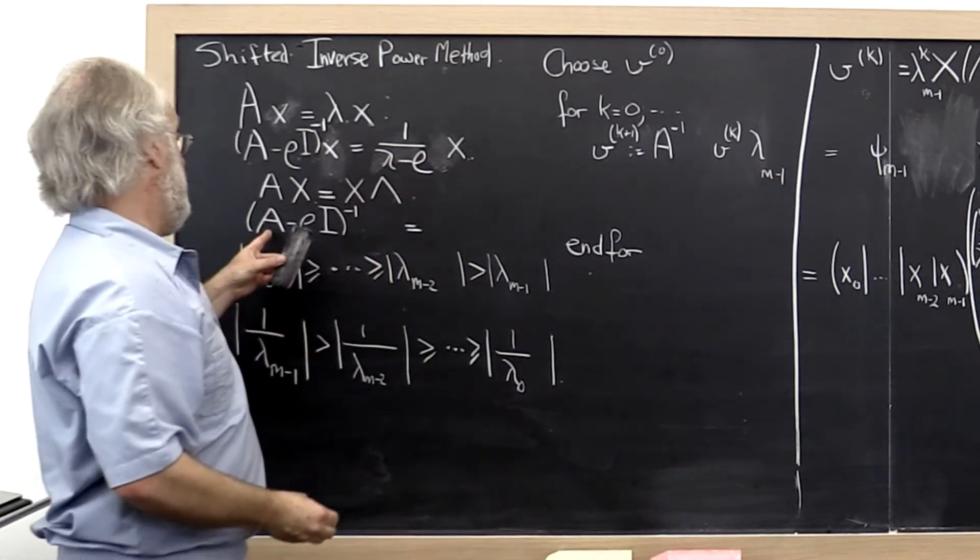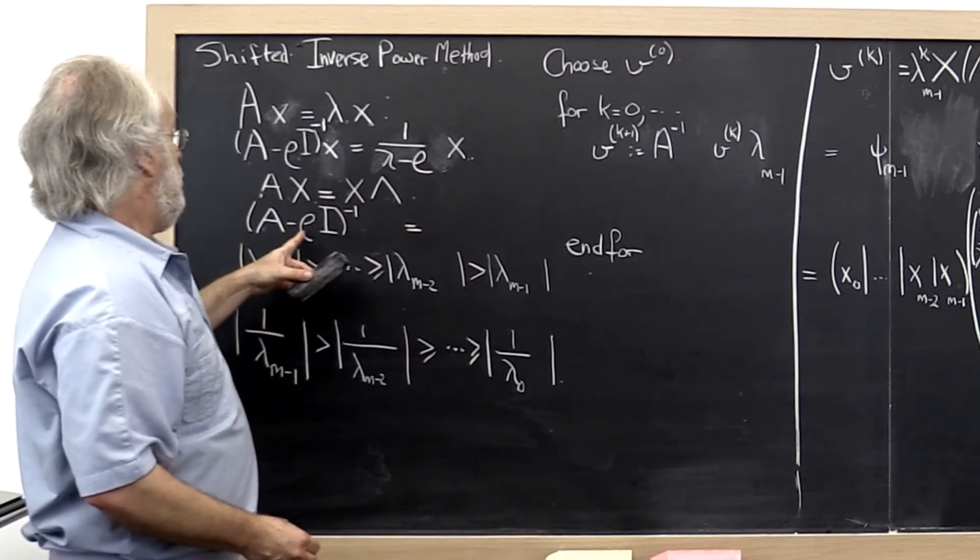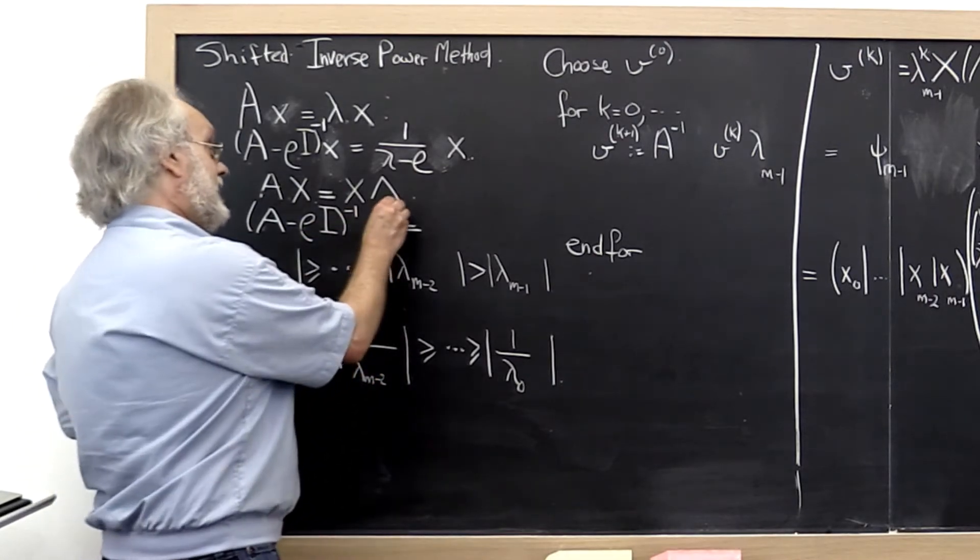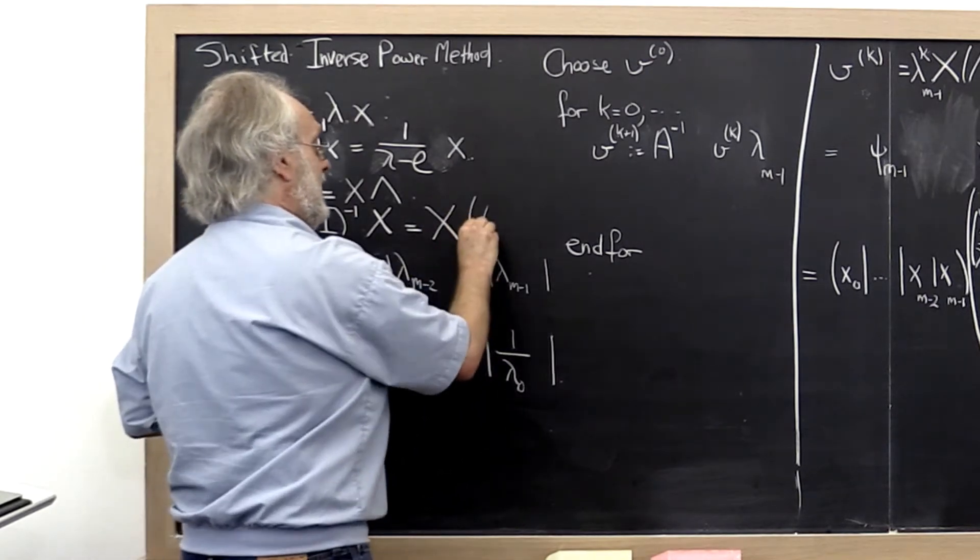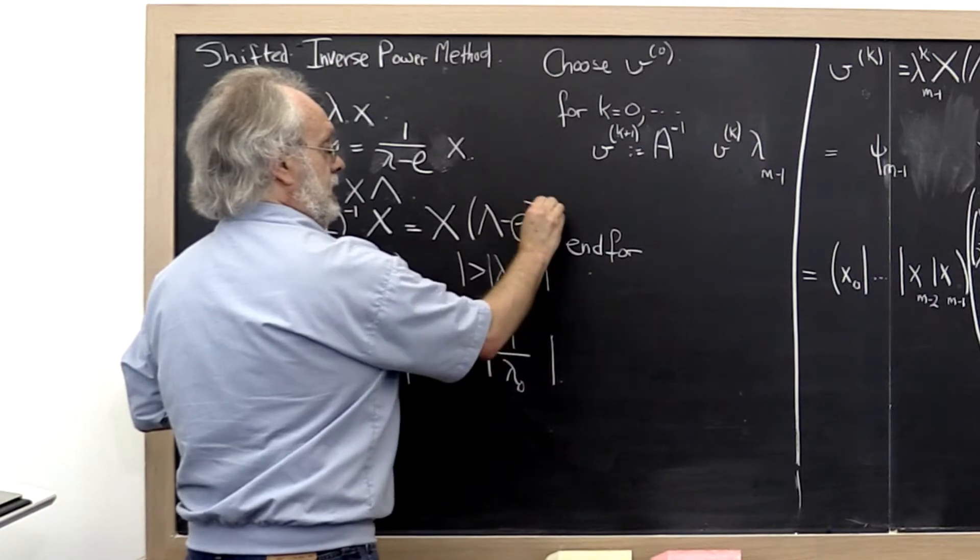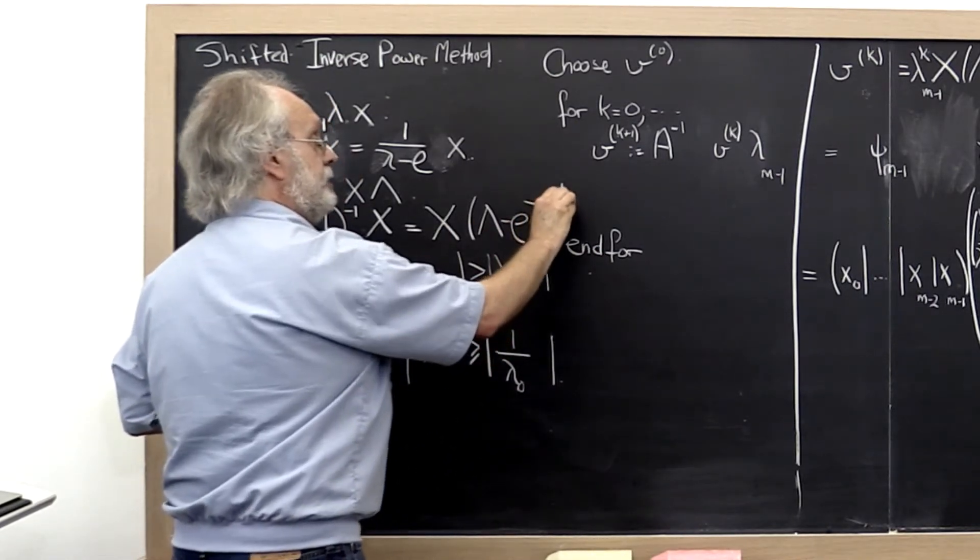And similarly, if we know that Ax equals x lambda, then A minus rho times the identity inverse times x is equal to x times lambda minus the shifted, actually minus the shifted matrix lambda inverse.